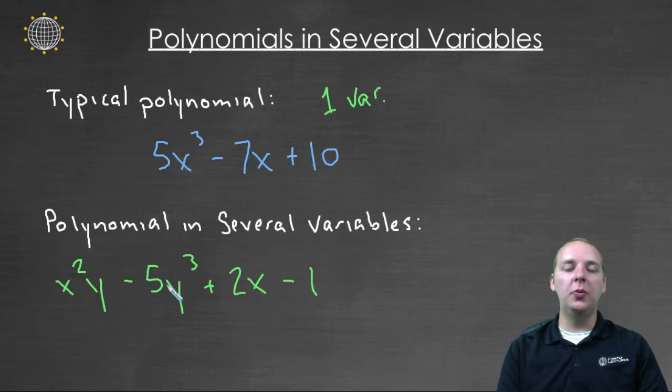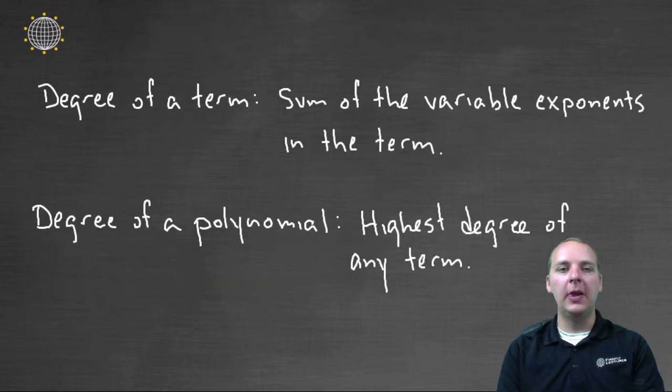Now this does open up a few questions, like how do you find the degree of this polynomial. But nevertheless, it is still a polynomial that we see from time to time. Let's talk about degree here. When you have a polynomial that has multiple variables, the degree of a single term will be the sum of the variable exponents in that term.